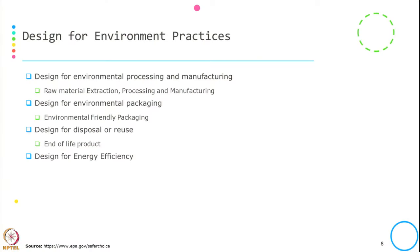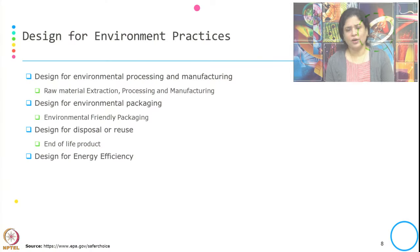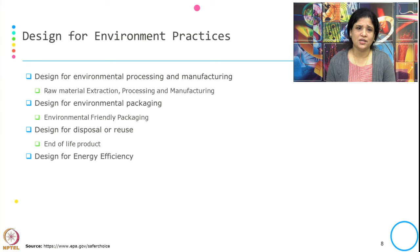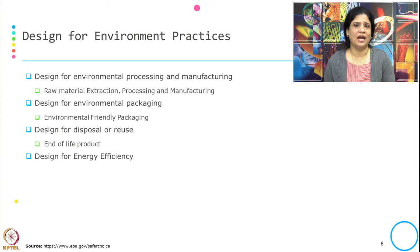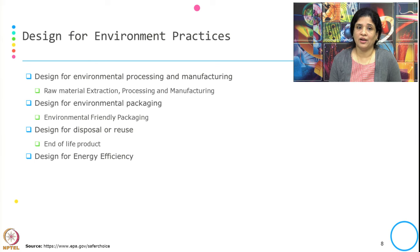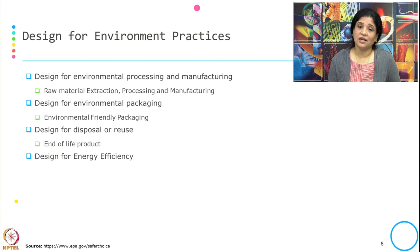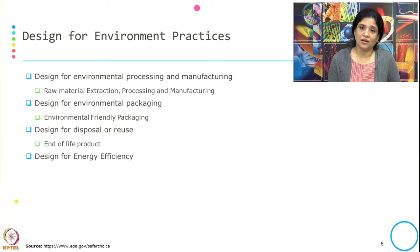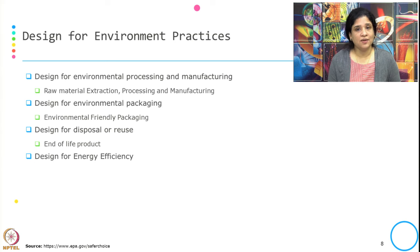These are the DfE practices. We design for environmental processing and manufacturing — that is one stage where DfE is practiced, covering raw material extraction, processing, and manufacturing. Then DfE can be part of packaging — getting into environmentally friendly packaging. Then design for disposal and reuse, where we address product design such that at the end of life of the product, the human health impact and environmental impact is less. And design for energy efficiency — how the product design or technology should be so that it can be more energy efficient.